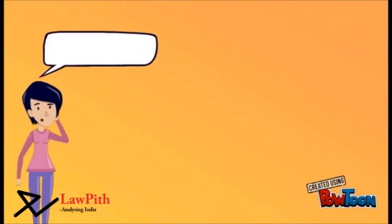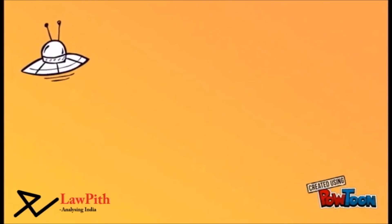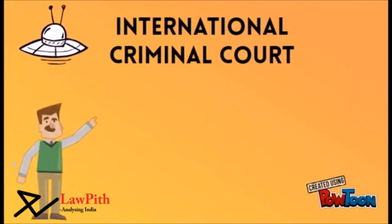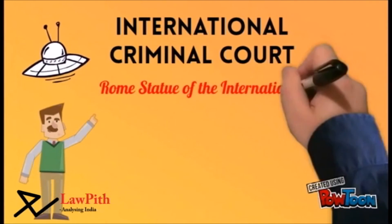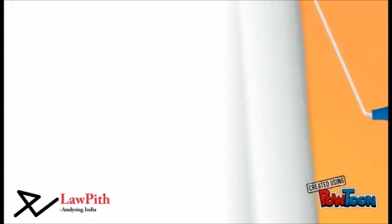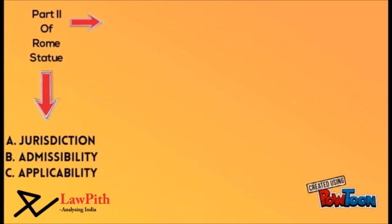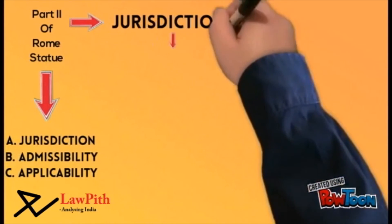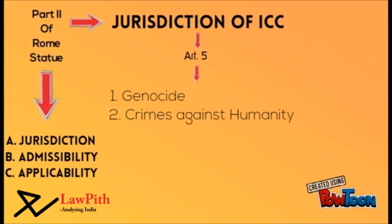Furthermore, clause 5 of Article 36 empowers the court to rule over questions and issues of its own jurisdiction. Now we proceed to the International Criminal Court. The principal instrument which determines the jurisdiction and the procedure for the ICC is the Rome Statute. Part 2 of the Rome Statute deals with jurisdiction, admissibility and applicability in the court. Article 5 provides for jurisdiction of the court over four following acts: 1. Genocide, 2. Crimes against humanity, 3. War crimes, and 4. Crimes of aggression.